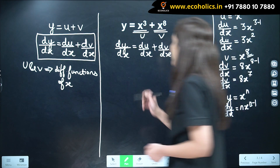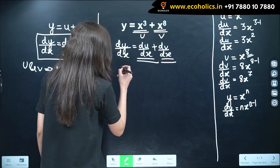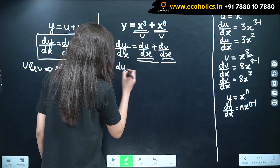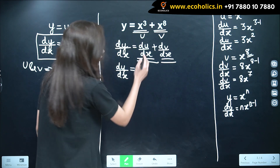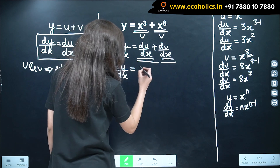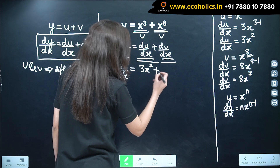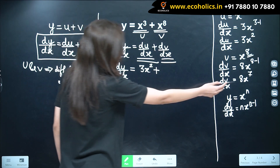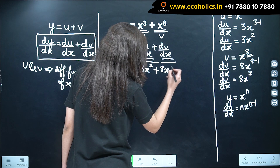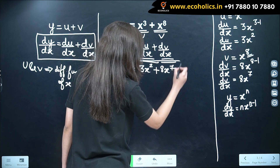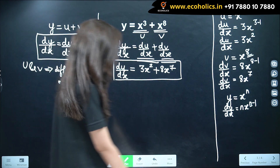Since we have already found du by dx and dv by dx, our dy by dx is equal to 3x squared plus 8x raised to 7. And this becomes the derivative. Now let's look at another example.